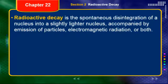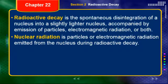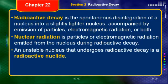Radioactive decay is the spontaneous disintegration of the nucleus into a slightly lighter nucleus accompanied by emission of particles, electromagnetic radiation, or both. Nuclear radiation is particles or electromagnetic radiation emitted from the nucleus during radioactive decay. An unstable nucleus that undergoes radioactive decay is called a radioactive nuclide — a term specific to nuclear chemistry referring to a specific instance of an element or atom.